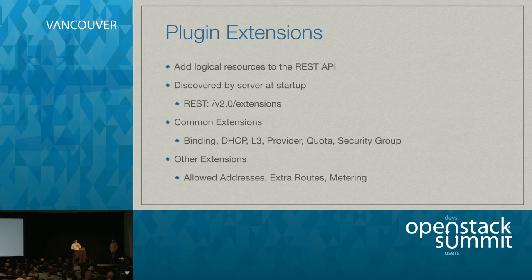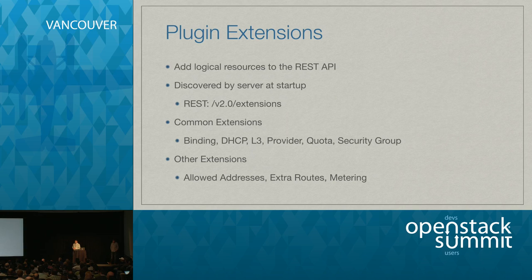We do allow for extensions to the API — you can add logical resources to extend it. Things like security groups are actually extensions of the core API. Other extensions include binding, DHCP, L3, and quotas. We also have allowed address pairs, extra routes, and the metering API as extensions as well.